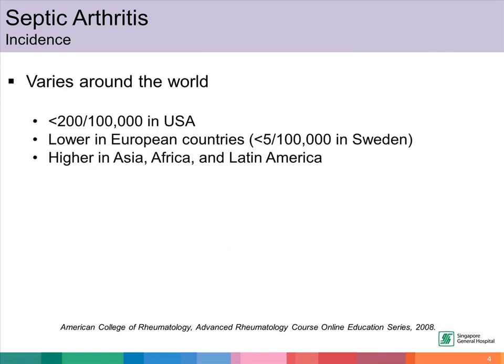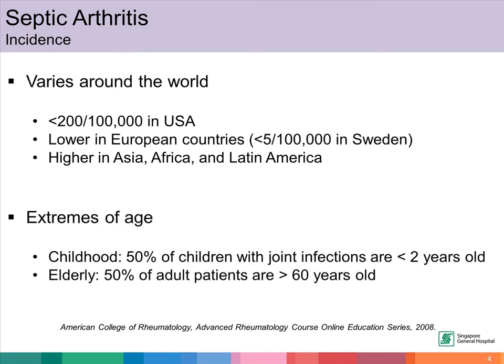The incidence of septic arthritis varies around the world. In the United States of America, the incidence is less than 200 for every 100,000 people in the population. The incidence is lower in European countries and higher in our Asian population. Those at extremes of age are more likely to develop septic arthritis. 50% of children with joint infections are less than two years old, and 50% of adult patients are more than 60 years old.